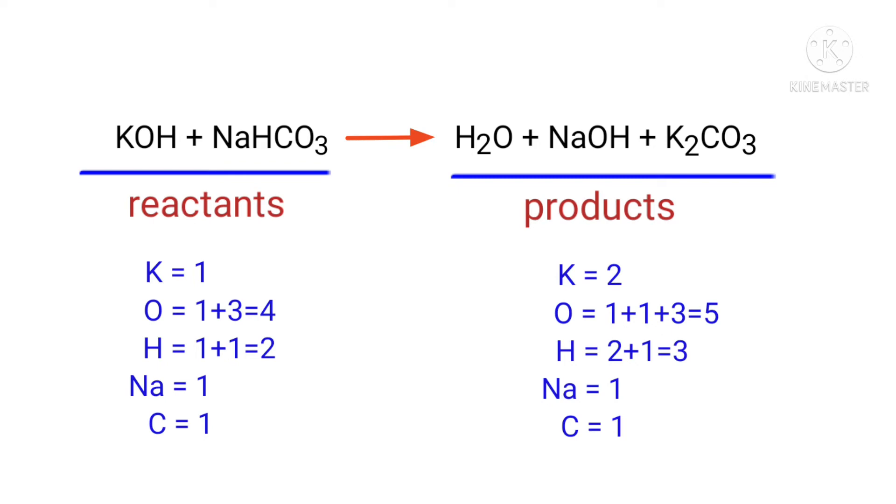In this equation we need to balance our potassium atoms first. To do this we need to put a coefficient of two in front of KOH.